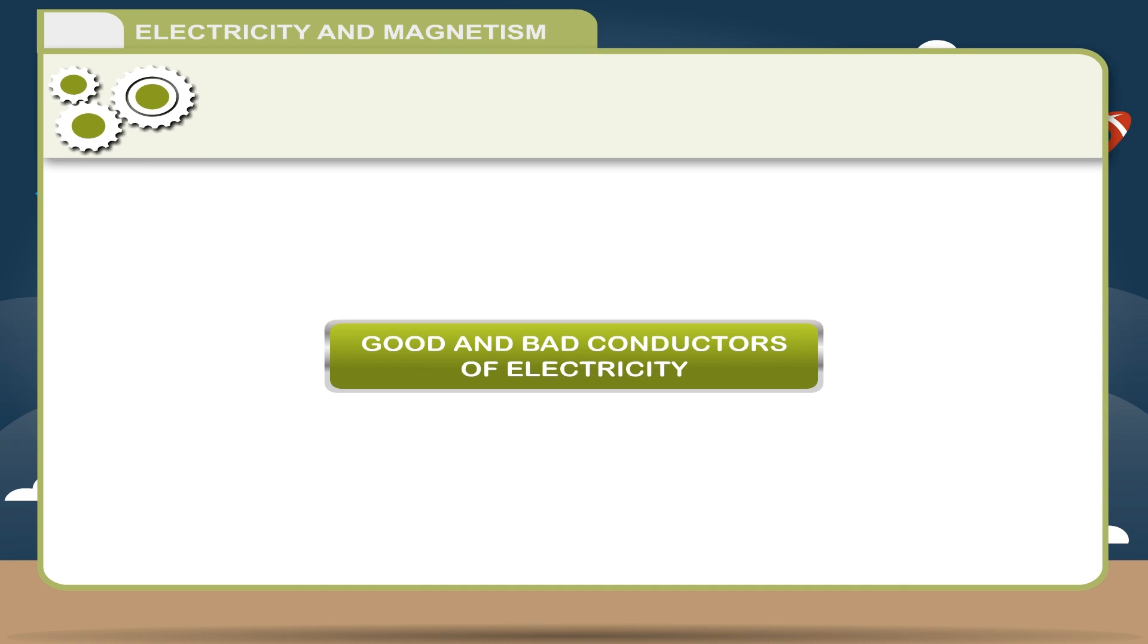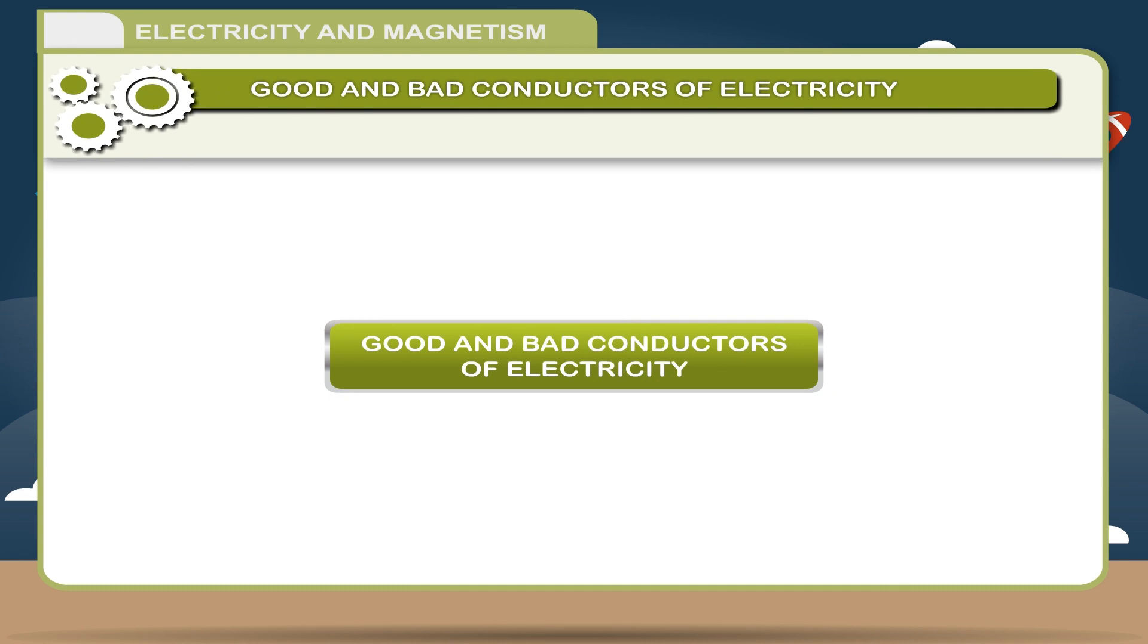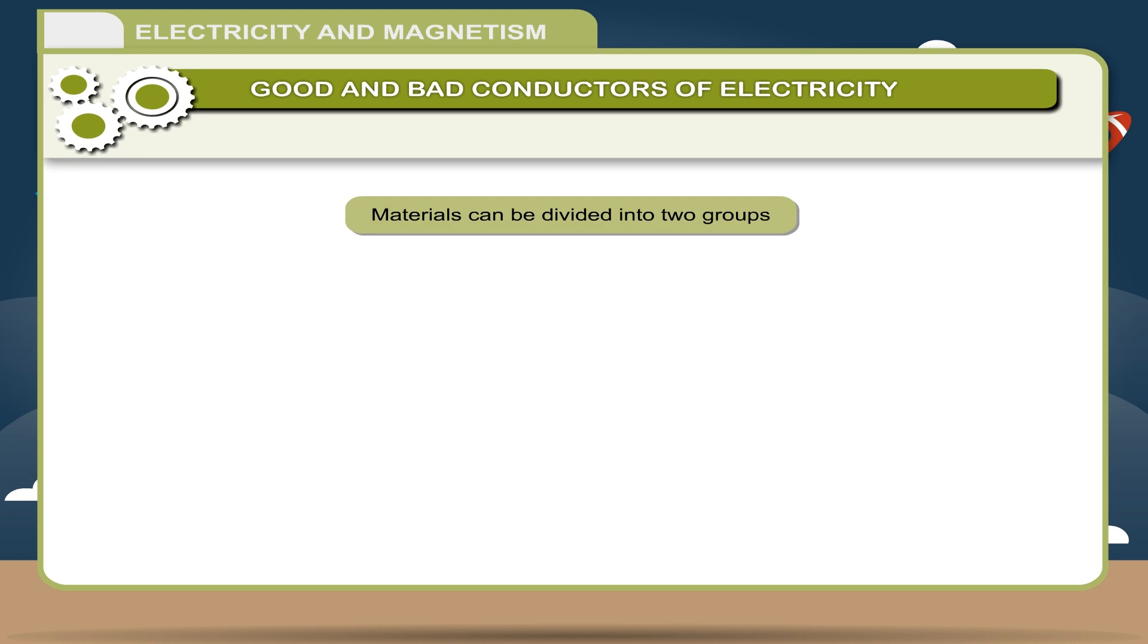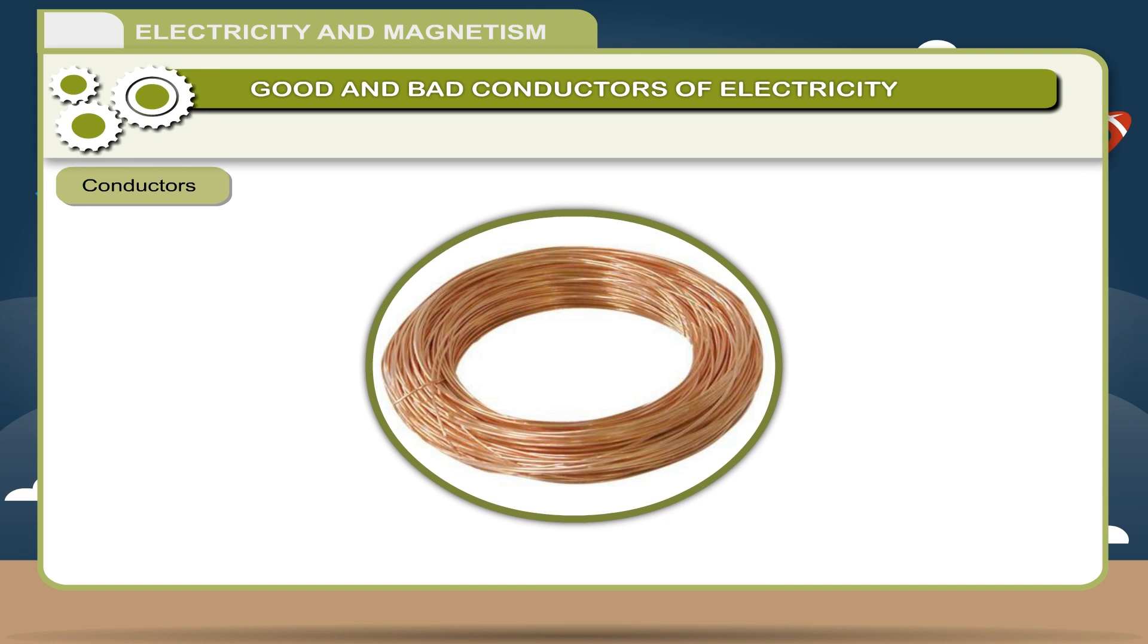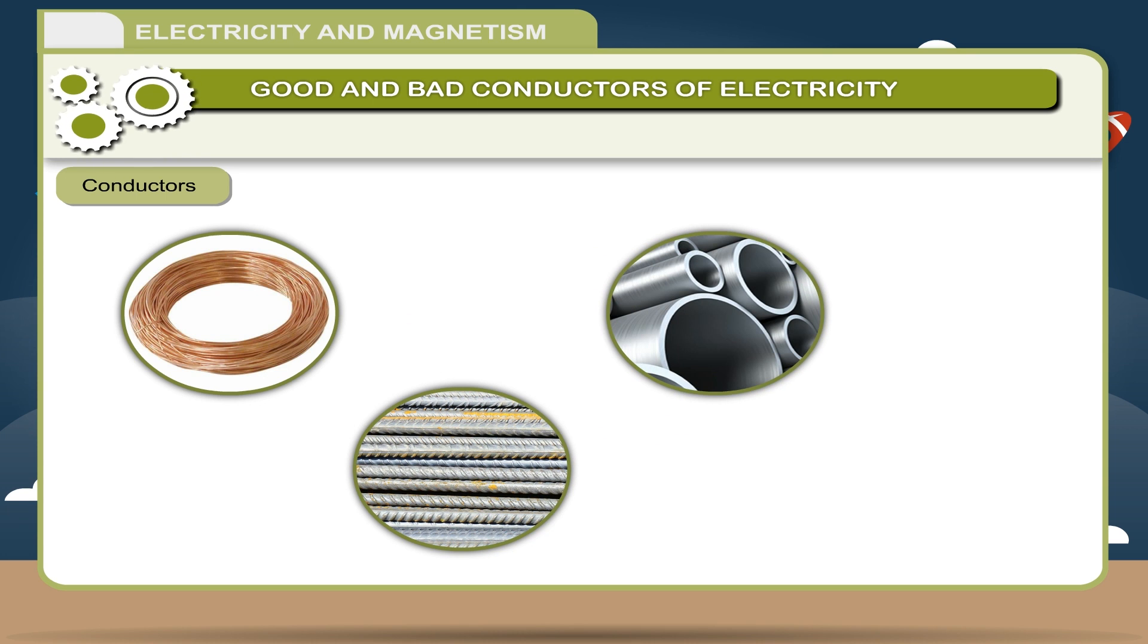Good and bad conductors of electricity. Materials can be divided into two groups: Conductors and insulators.